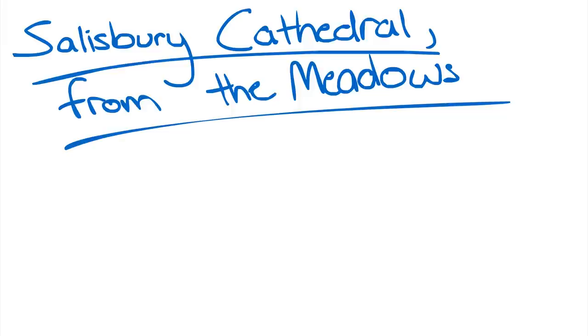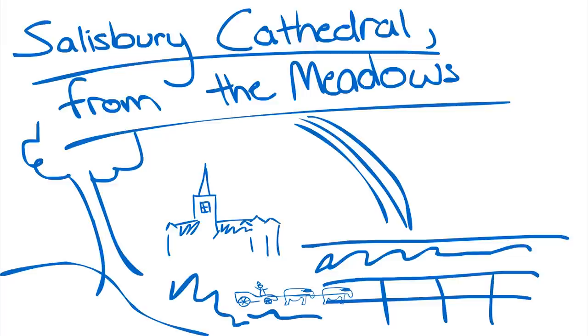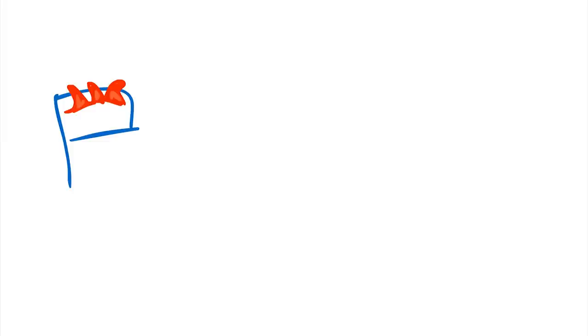His famous painting, Salisbury Cathedral from the Meadows, displays a cathedral in the background surrounded by a softly drawn scenery. Horses pull a wagon and its rider through a small pond while a rainbow illuminates the clouds in the distance.